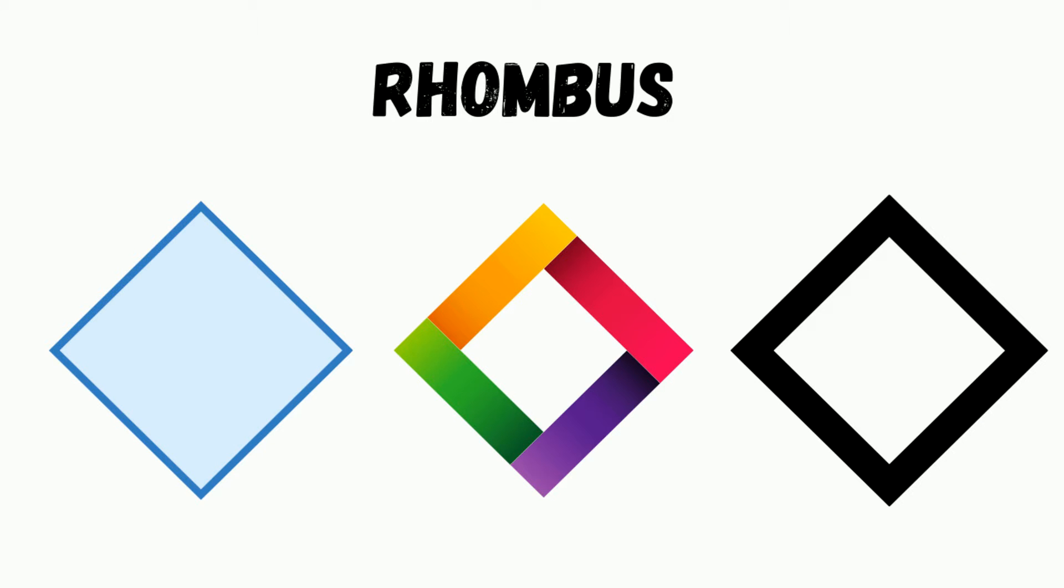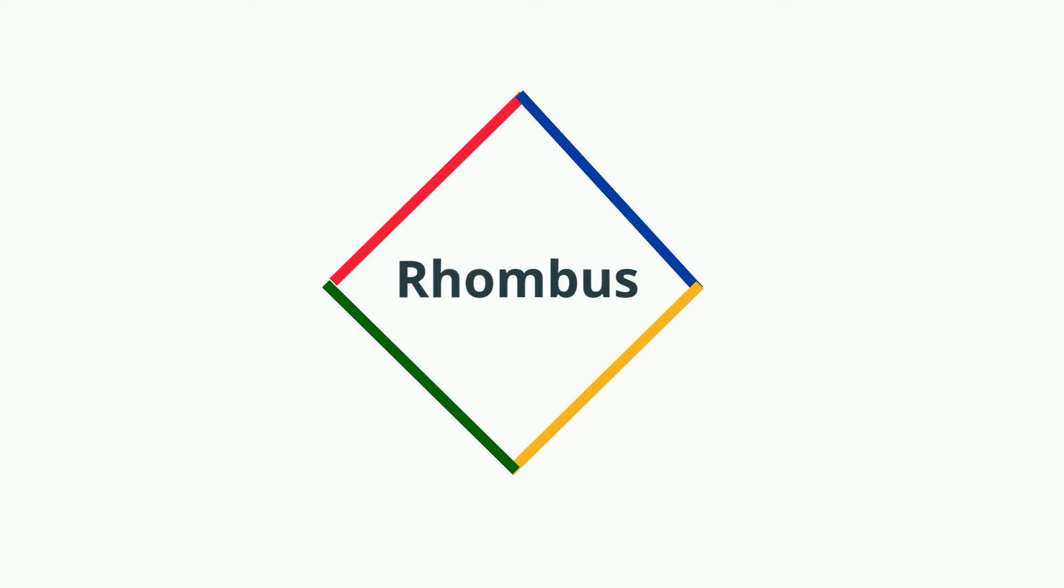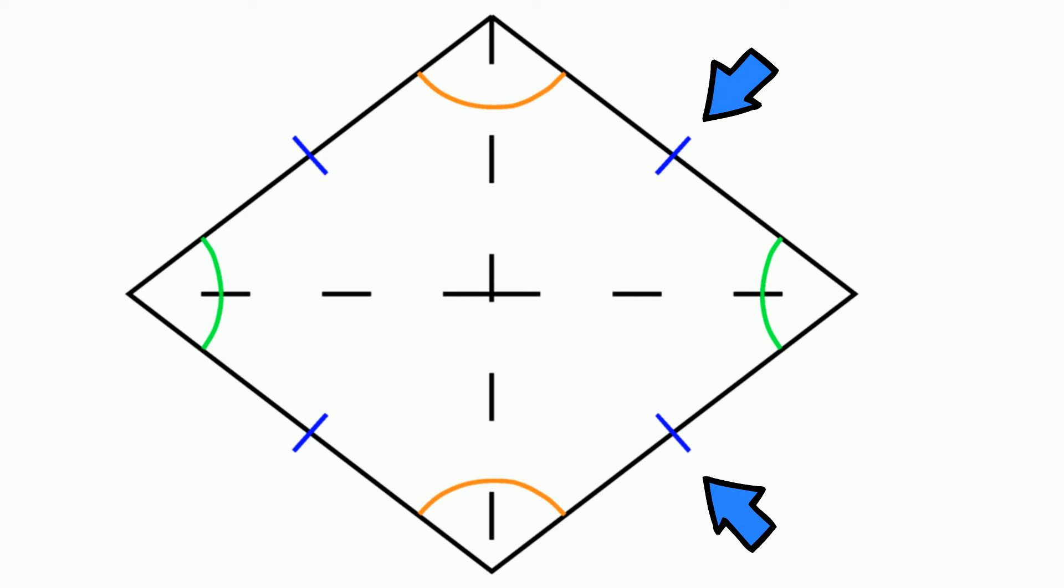A rhombus is a plain 2D figure that has straight lines. It is considered a quadrilateral, so it has 4 sides. Now each of these sides is equal.